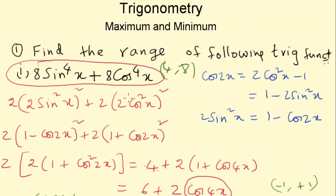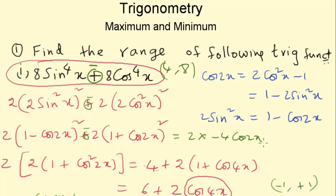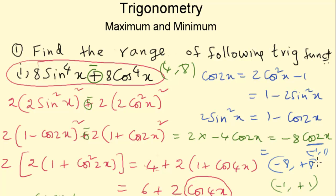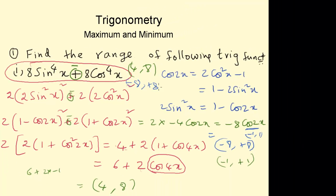Let's see what happens if we have a negative sign instead of plus. Then both terms go minus, giving us (a minus b) whole square minus (a plus b) whole square, which equals minus 4ab. So we get 2 times minus 4 times 1 times cos 2x, which is minus 8 cos 2x. The range of cos 2x is minus 1 to 1, so the range of the whole function would be minus 8 to plus 8.